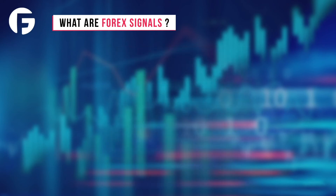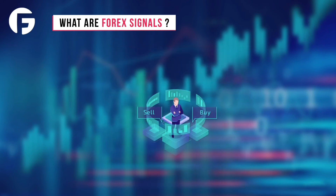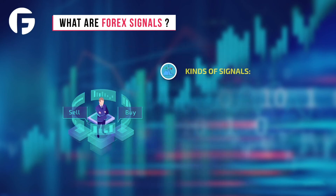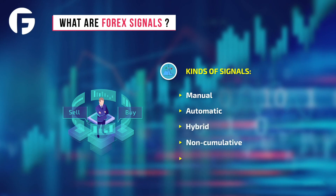Kinds of signals: basically, signals are divided into manual, automatic, hybrid, and by correspondence. Also, all signals are either paid or free.